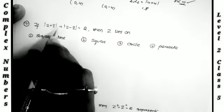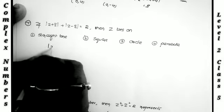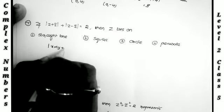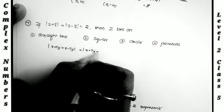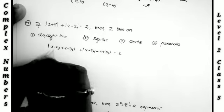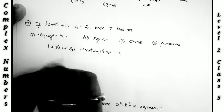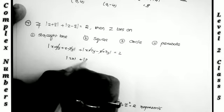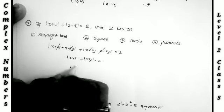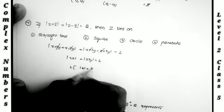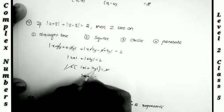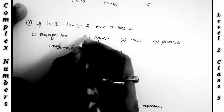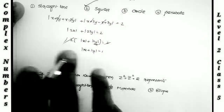Next: if |z + z̄| + |z - z̄| = 2, what does z lie on? Substituting z = x + iy and z̄ = x - iy: |2x| + |2iy| = 2. Dividing by 2: |x| + |y| = 1. This equation |x| + |y| = 1 represents a square.